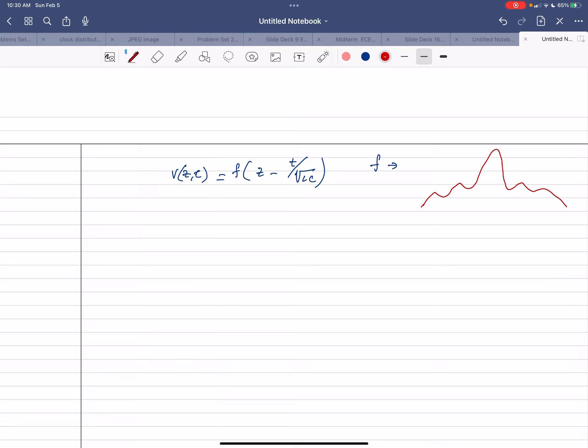So my point being that f, the function f can be anything. It's just that the solution really depends on what we launched into this transmission line, but the point being that this will actually travel through the transmission line. So let's look at what the solutions will look like.